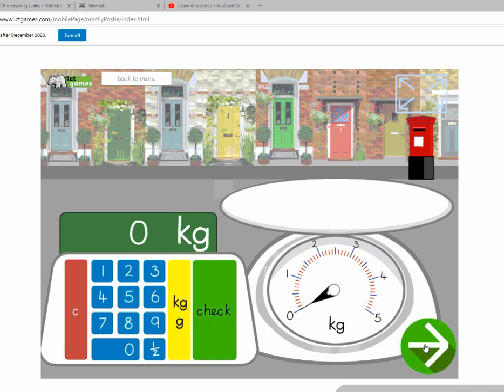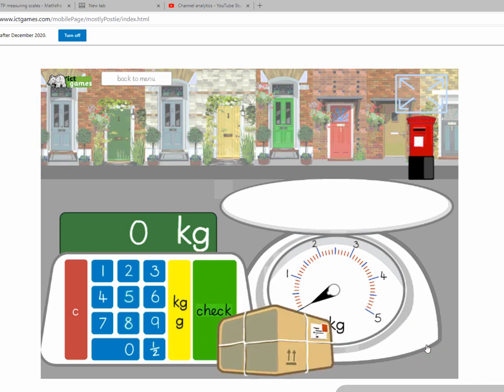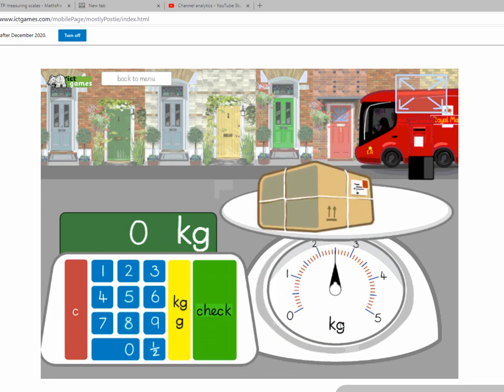As you can tell, these are random, so hopefully eventually we'll get a half. Here we are, right. So have a think about what that is. So it's one, it's two, and it's halfway between two and three. So we need to put a two and a half. And check. So that is the simplest one of these.